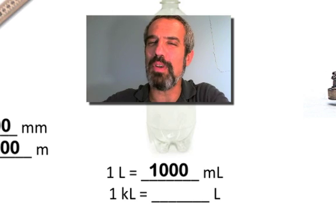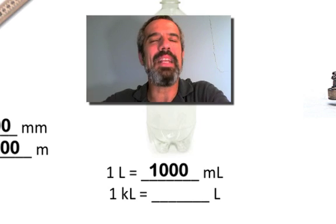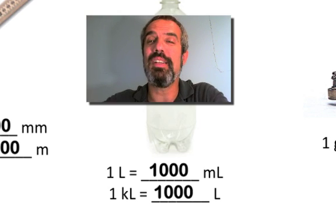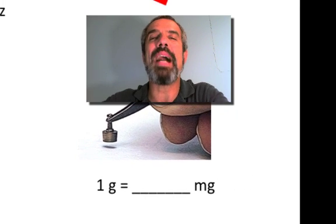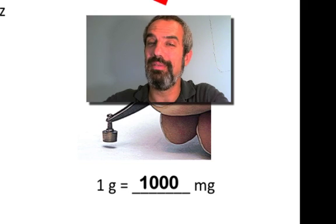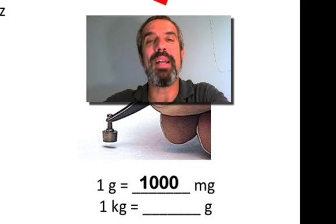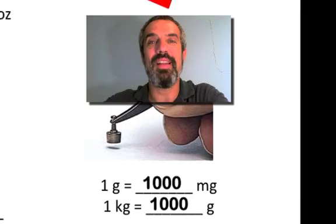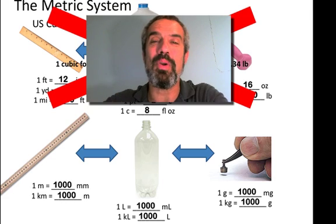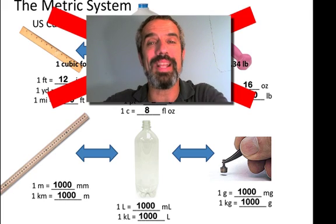One kiloliter — which you don't hear very often, and we'll see why — equals how many liters? A thousand. One gram equals how many milligrams? A thousand. And one kilogram, in other words one thousand grams, equals how many grams? A thousand. There's a definite system here, and equally importantly there's a connection between these: a meter is related to a liter, and a liter is related to a gram.